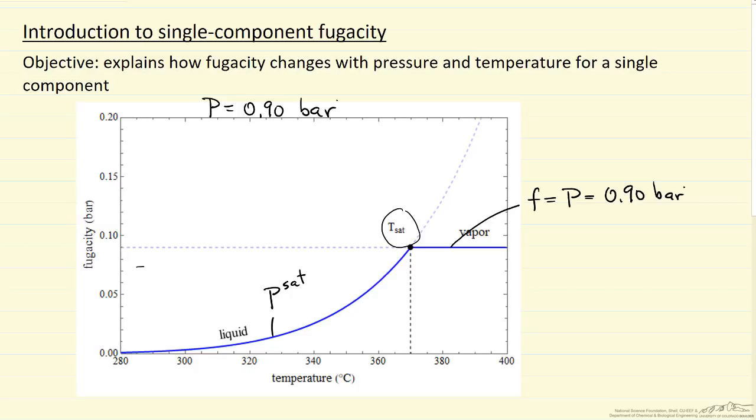Namely between here and here, and then when the vapor, the solid line, has the lower fugacity here and then up to higher temperatures, then the vapor is the stable phase. And we're assuming ideal gas, and that's why we set fugacity in the vapor phase equal to the pressure.